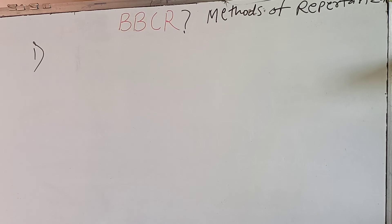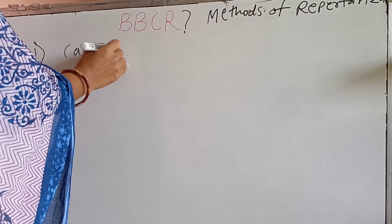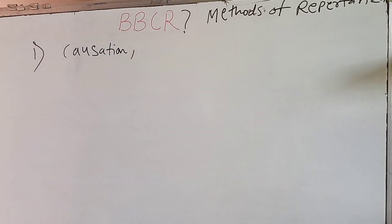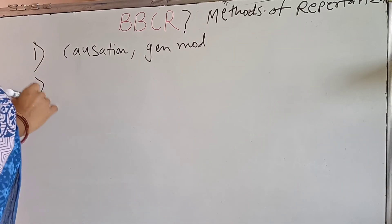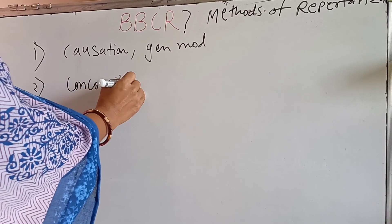When should we use BBCR? Since the mind section in BBCR is not as elaborative as in Kent's Repertory, if mental symptoms are not prominent in the case and if we get a clear causation or general modalities, then we can use BBCR. If mental symptoms are very characteristic, Kent's Repertory is preferred. BBCR is best when mental symptoms are not prominent, causation is available, and when you find concomitant symptoms or an exact time of aggravation.